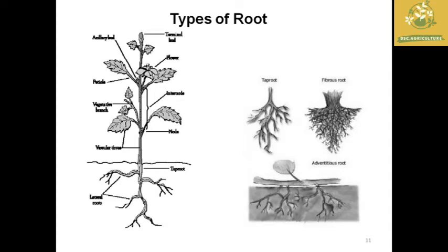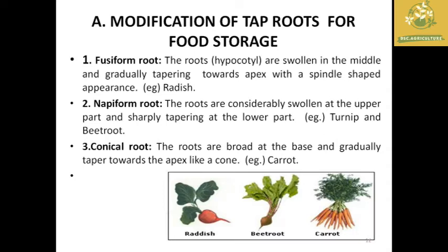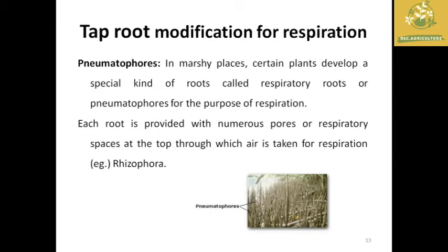Now we see modifications of tap roots for food storage. The first is fusiform roots — swollen in the middle and gradually tapering toward the apex, giving a spindle-shaped appearance; example: radish. The second is napiform roots — considerably swollen but partly tapered at the lower surface; example: turnip and beetroot. The third is conical roots — not swollen, but gradually tapering toward the apex giving a cone-like appearance; example: carrot.